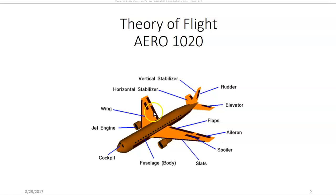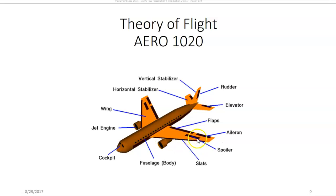On the aft section of the wings, you have flaps. Flaps are used to produce more lift and more drag. And then you have the aileron. Ailerons are designed to move the aircraft around the longitudinal axis. That movement is known as roll. This aircraft is a transport aircraft, and most transport aircraft have what are called slats on the leading edge of the wings. Slats produce more lift, as well as spoilers. Spoilers are designed to get rid of lift.